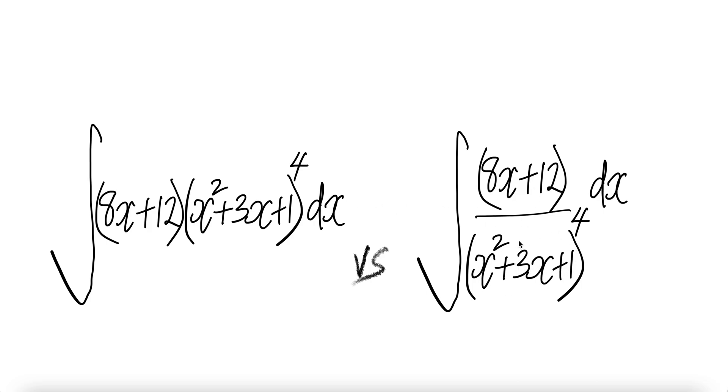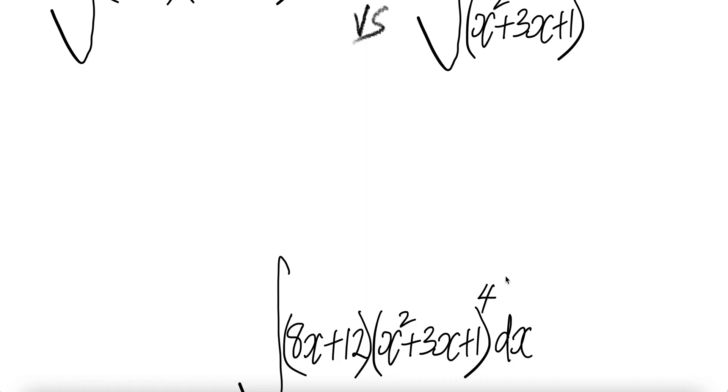Notice that they are similar in the sense that here, 8x plus 12 is multiplied to this, whereas in this case, it is the numerator and then this one goes downstairs. So they are kind of similar in that sense.